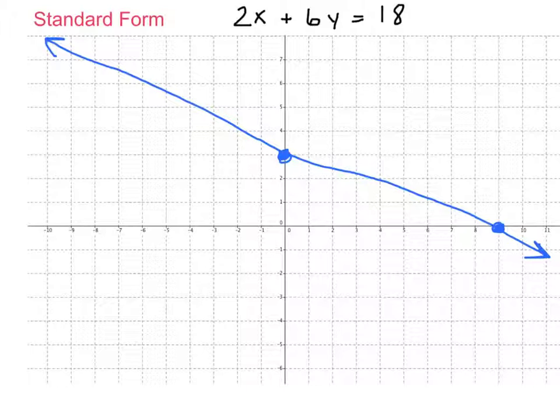Use your imagination. It is a line. But remember, the idea is we do c over a to get this dot, we do c over b to get this dot, we draw the line, and we're out of here.